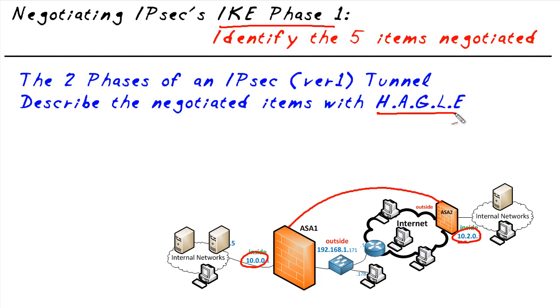A great way to remember the five specific things that have to be agreed to by these two devices is to use the keyword 'haggle' — like we're going to go and haggle. What does haggle represent? H-A-G-L-E. If you remember that, you'll be able to recall each element based on the letters. Let's take a look at each one.